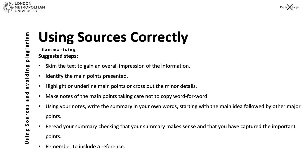Here are some tips to help you through summarising. Number one: skim through the entire text to get a general idea. Number two: identify the main points — use a highlighter and cross out non-relevant parts. Number three: make your own notes in your own words, not verbatim. Number four: using those notes, begin to write a summary in your own words. Number five: reread the summary — ideally out loud, as you can spot errors more easily — and make sure it covers all the important parts. Number six: remember to include a reference.